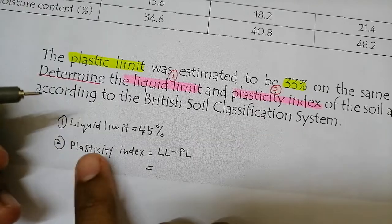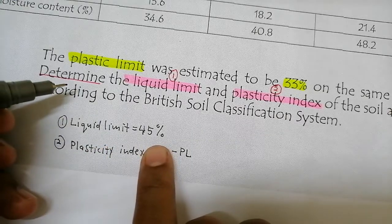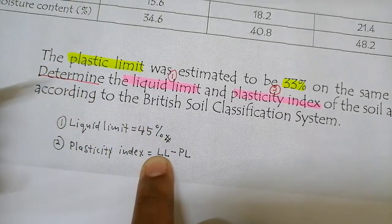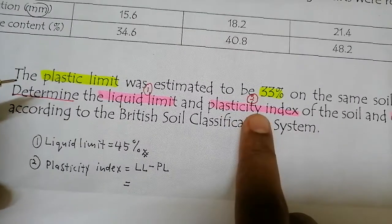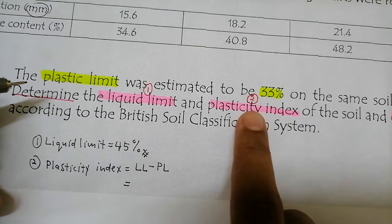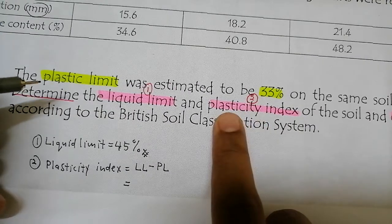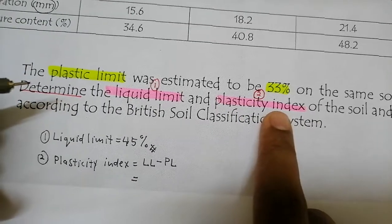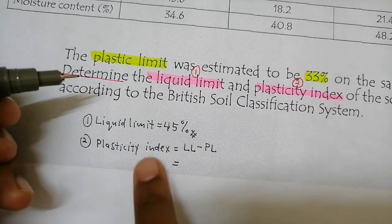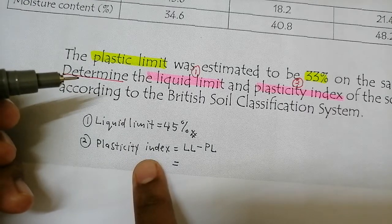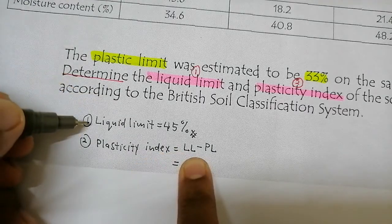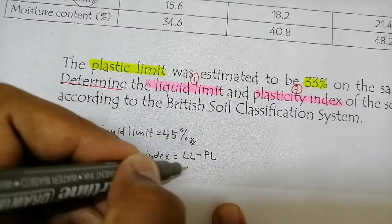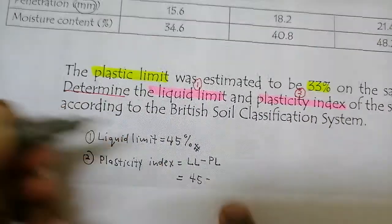So we write down: liquid limit = 45%. That is our first answer. The second thing we need to find is the plasticity index, or PI. We learned about this already — PI equals liquid limit minus plastic limit. So liquid limit is 45.